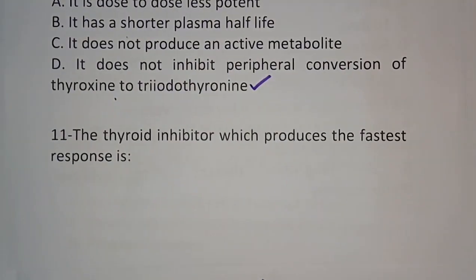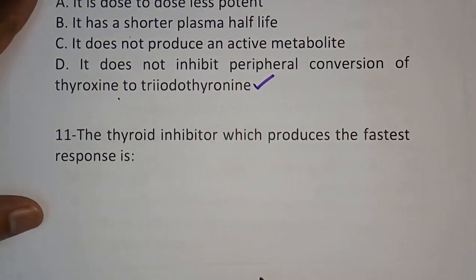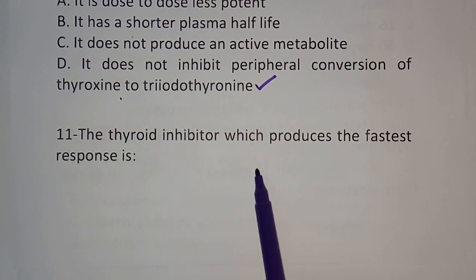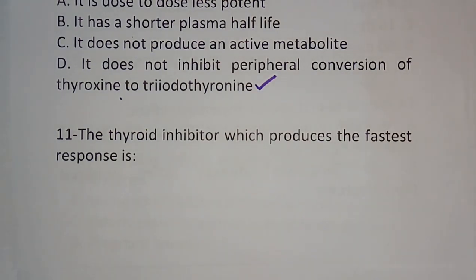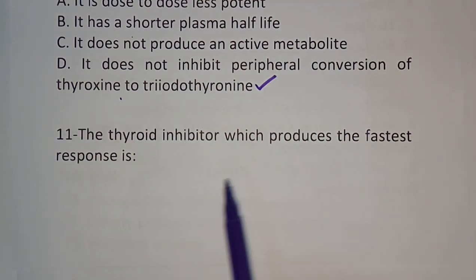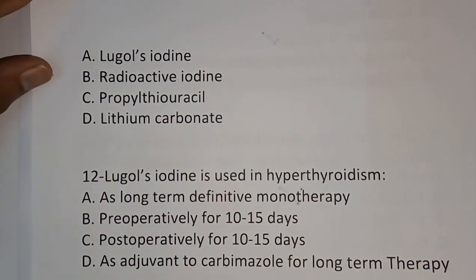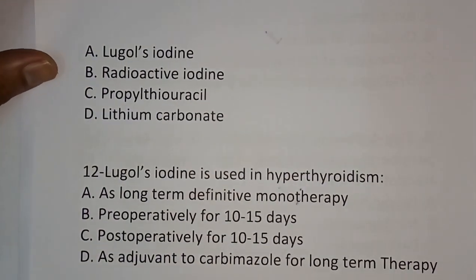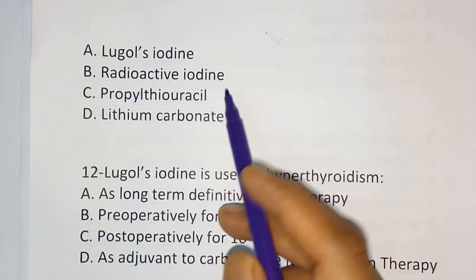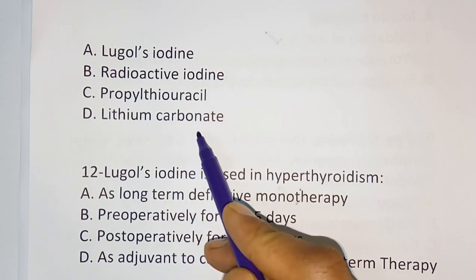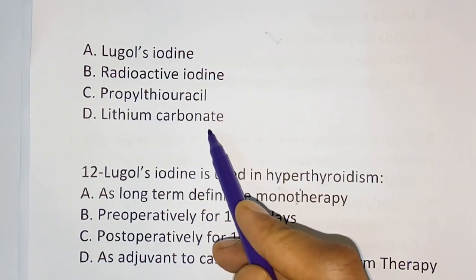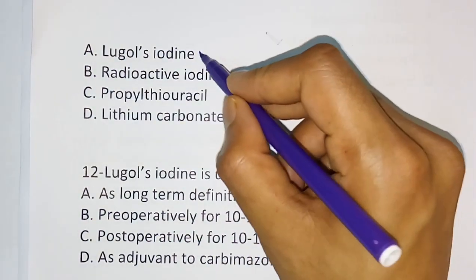Question number eleven: The thyroid inhibitor which produces the fastest response is — options are Lugol's iodine, radioactive iodine, propylthiouracil, or lithium carbonate. The correct answer is Lugol's iodine.